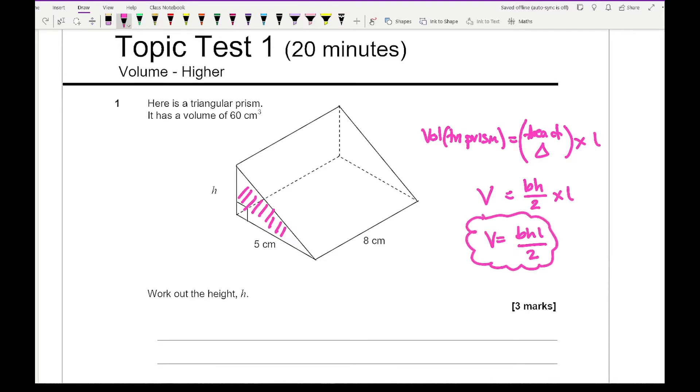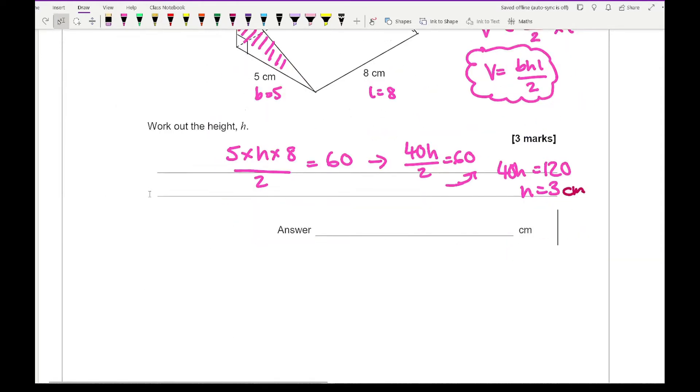Now this is the formula that I'm going to be using and substituting the letters in. So here L equals 8, B equals 5, and H equals H, and V equals 60. So I've got 5 times H times 8 all divided by 2 equals 60. If I neaten all of that, I get 40H over 2 equals 60. Then take the 2 over to the other side, which gives 40H equals 120. So H equals 3 centimeters.